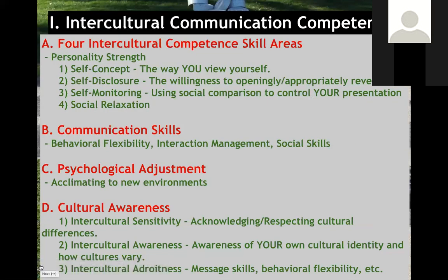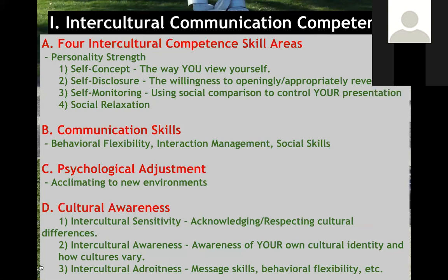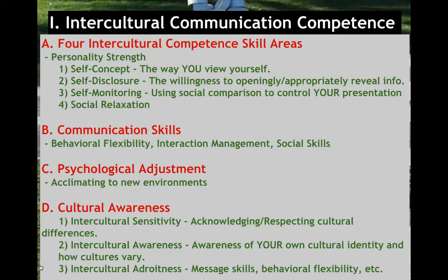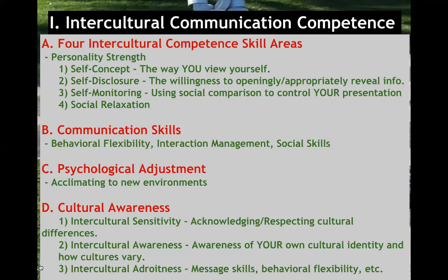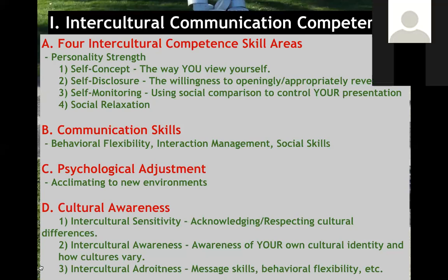There are four intercultural communication skill areas. The first is self-concept — the way that you view yourself, whether positive, negative, or neutral. The second is self-disclosure — how much you're willing to reveal about yourself. Like Shrek talking about himself as an onion, peeling back layers to reveal things to other people. When we meet someone, peeling back those layers is important because if they know more about you, they're more likely to feel closer to you and share more about themselves as well.